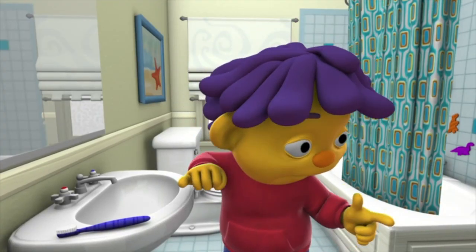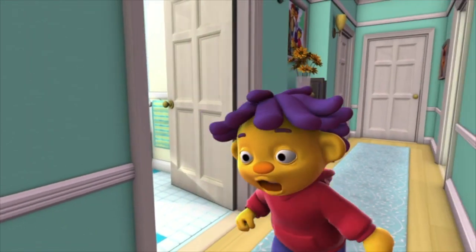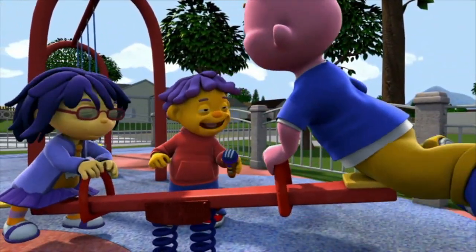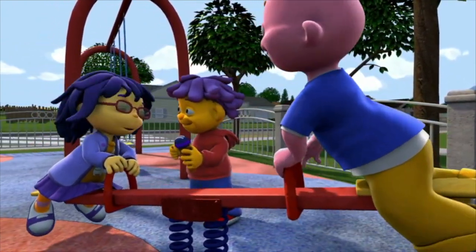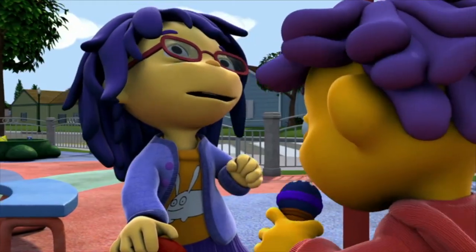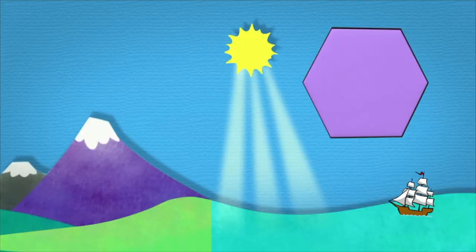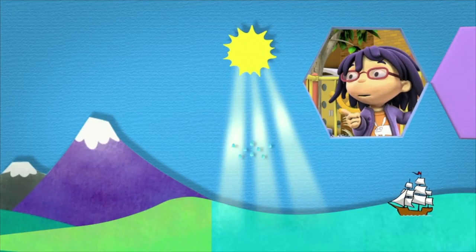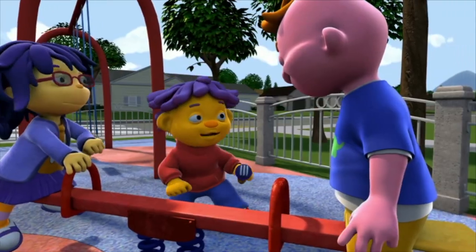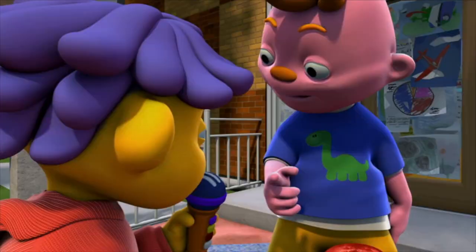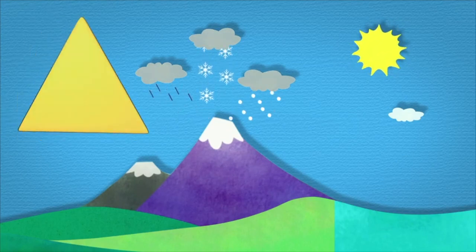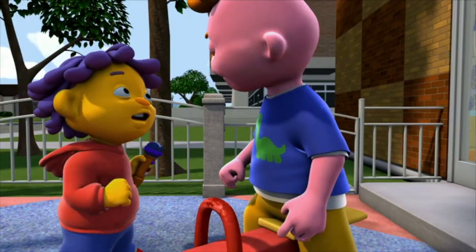Sid asks his friends May and Gerald. May explains: when water is heated by the rays of the sun, it evaporates into the air and turns into a cloud. Gerald adds: the water from the cloud falls back to the earth in the form of rain, snow, or hail. Sid then asks Gabriella what happens to water after it rains. Gabriella explains: when the rain falls it waters the earth, fills streams and lakes with fresh water, and the rest evaporates and floats up to become clouds — then the cycle of water begins again.